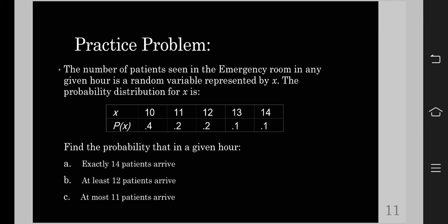For the second one, we have here the keyword at least. Since we have at least, it tells us that from 12 and above, we are also going to consider those probabilities whose corresponding values are above 12, and that is 13 and 14.